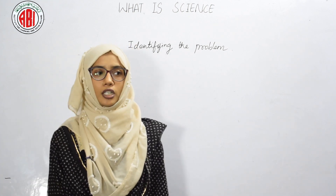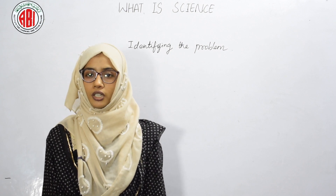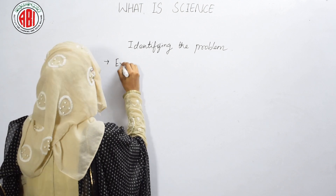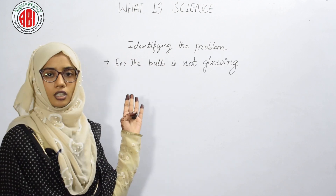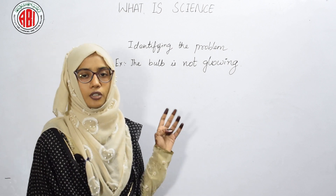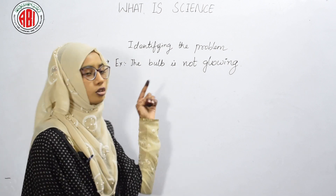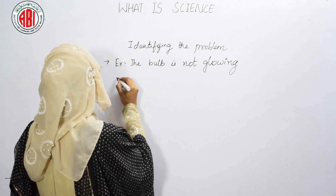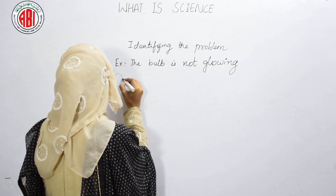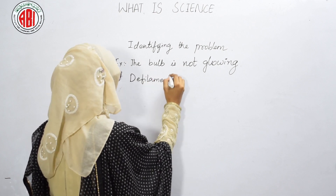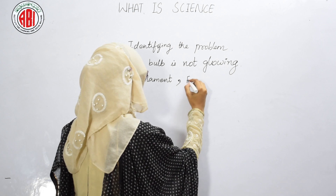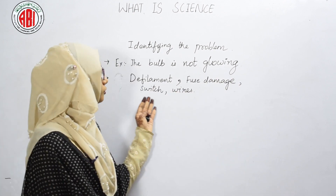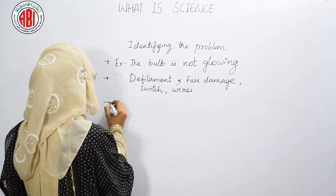Let us solve a general problem using the scientific method. The problem: the bulb is not glowing. In the first step, we identified the problem — we observed and asked the question: why is the bulb not glowing? The next step is to form a hypothesis — we list possible answers such as the bulb is not glowing due to filament or fuse damage, or due to a switch or wire issue.